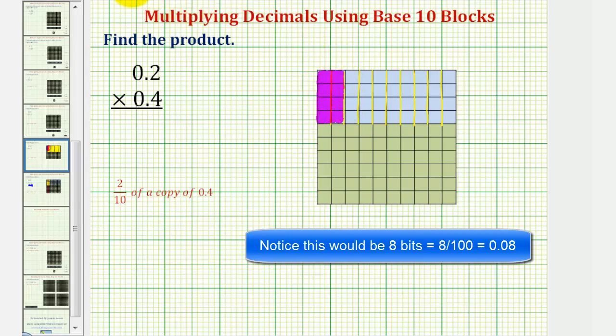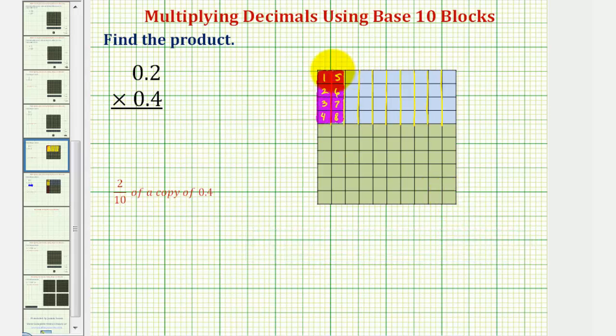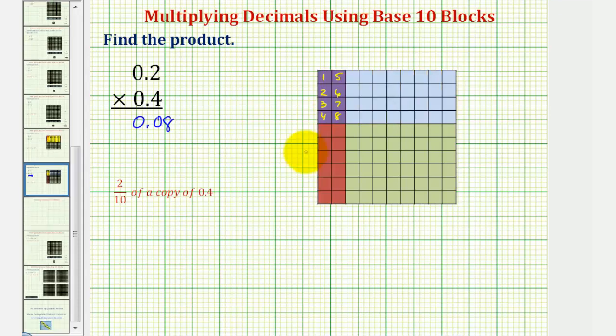And notice how, of course, the result is the same. We still have 1, 2, 3, 4, 5, 6, 7, 8 hundredths. But by partitioning the entire flat, and then shading two of those partitions, we can always look for the double shaded region to find our product.